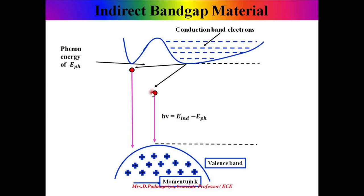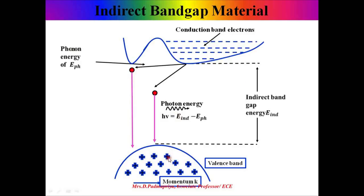The momentum vector is different for electrons and holes. If the minimum conduction band energy level is at momentum vector k1 and maximum energy level of the valence band occurs at momentum vector k2, then the electron transition will not take place directly from the conduction band to the valence band. Hence, a third particle called phonon energy — phonon means crystal lattice vibration — is needed to conserve the momentum, and electron-hole recombination takes place indirectly. That is why it is called indirect bandgap material. In this type, the recombination charge carrier lifetime will be large but the quantum efficiency will be very less.